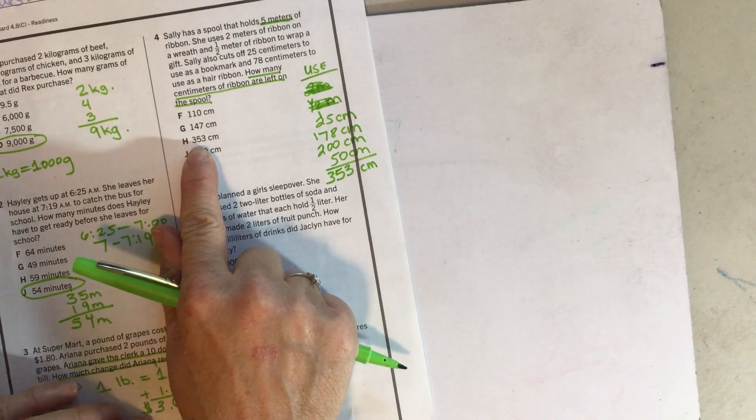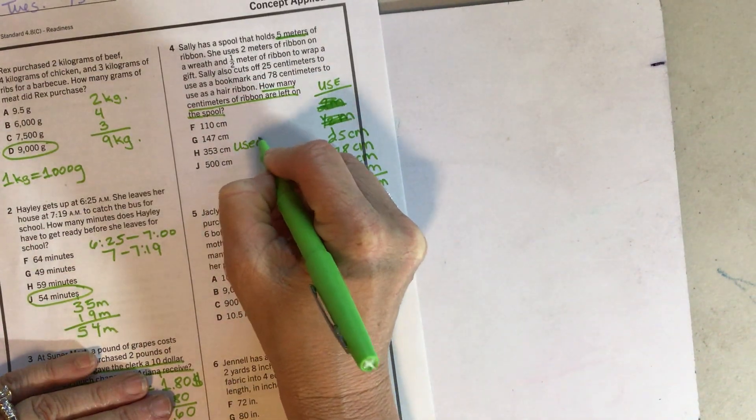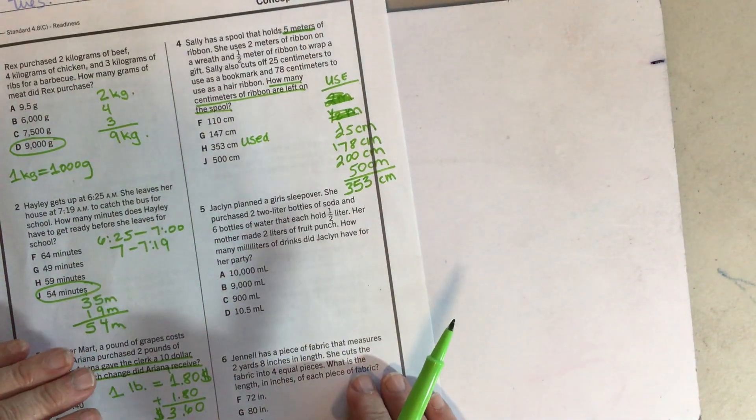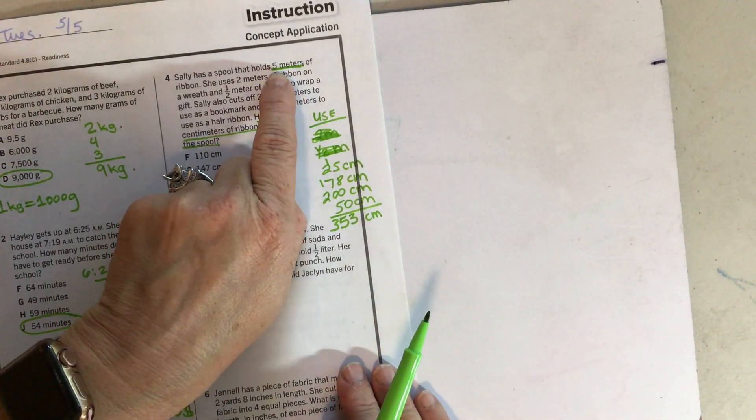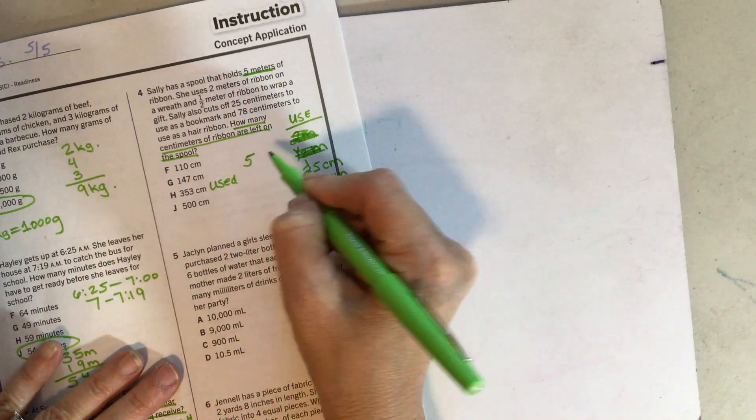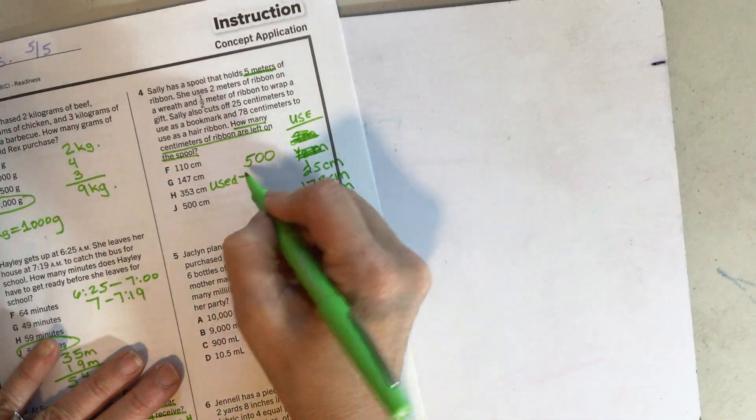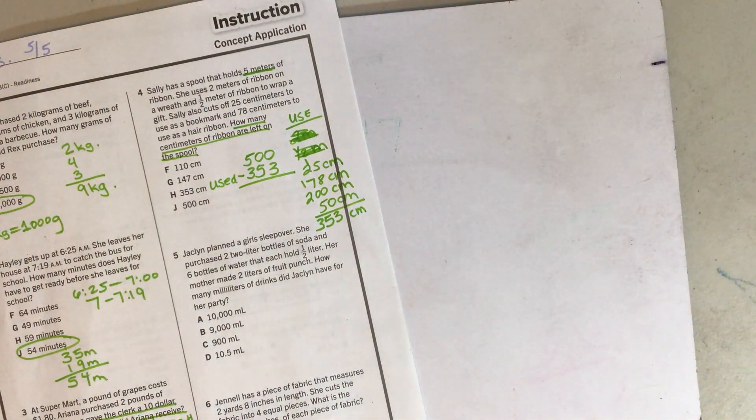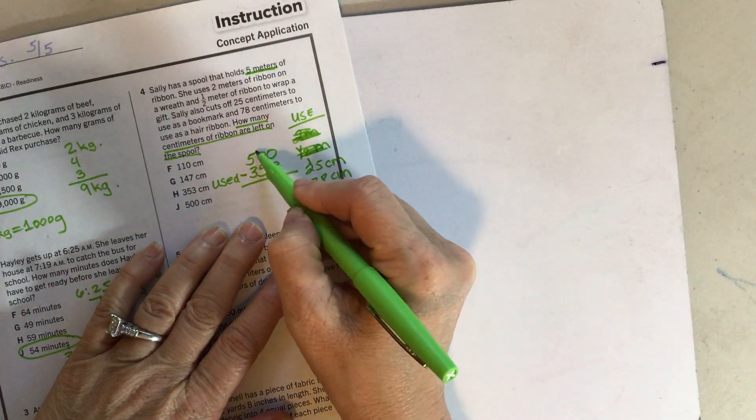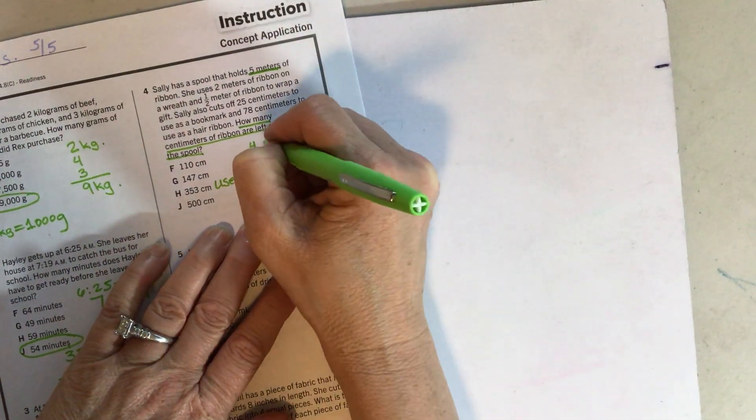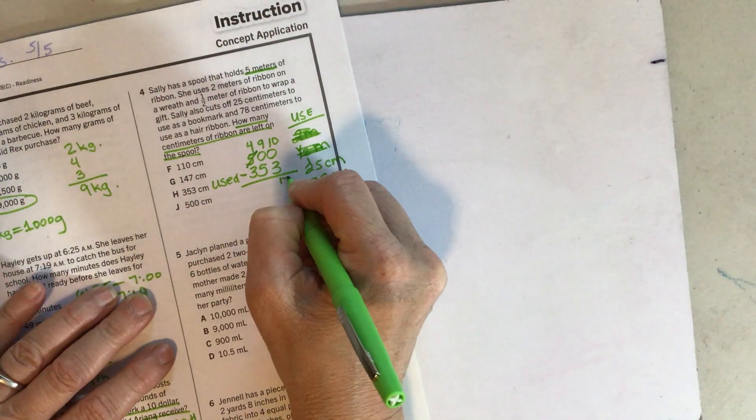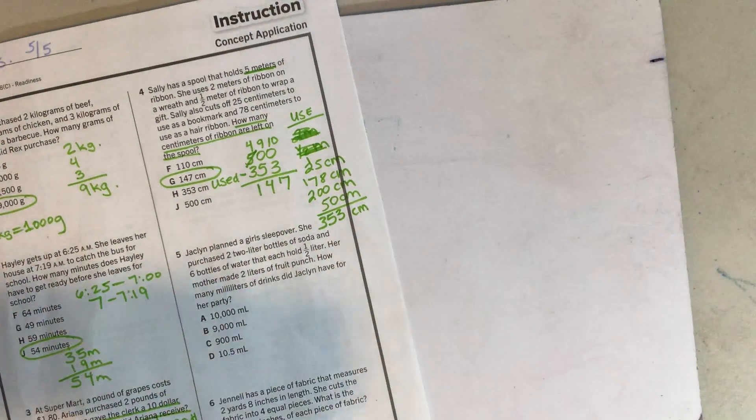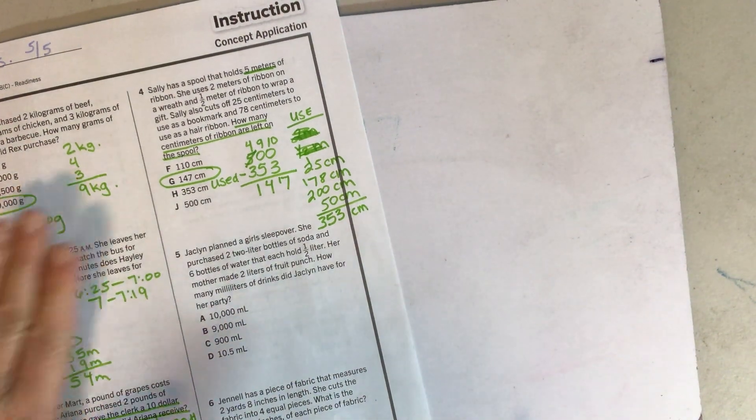So that is what she used, but that is not the question that it asked. How many were left on the spool if she started off with five meters? So five meters, if one meter is a hundred, five meters is 500 centimeters. Now I have to subtract 353. Pause the video for just a second. See what you get. Can't do zero minus three. Can't do zero minus five. Borrow from the five. 10 minus three is seven. Nine minus five is four. Four minus one is three. That is how many was left over. Lots of steps in that one.